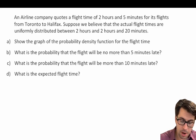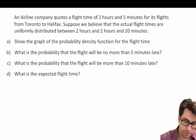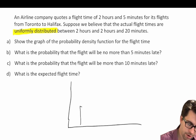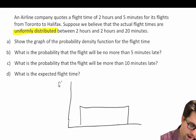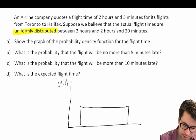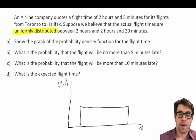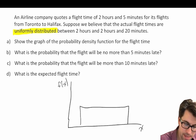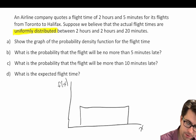Show the graph of the probability density function for the flight time. We're told that they're uniformly distributed, so we can go ahead and just draw our uniform distribution. We know that it looks like a rectangle. On our y-axis, we have our function of x; on our x-axis, we have some variable. Now we need to find what are our values for a and b. We're working in hours here, but there's also minutes.